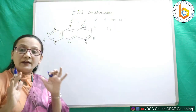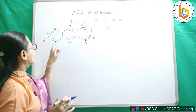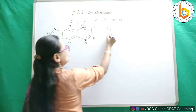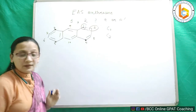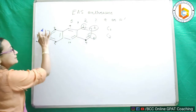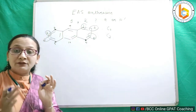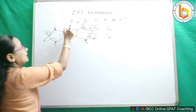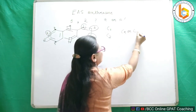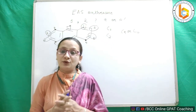We are only considering attack at position 1 because it automatically covers positions 4, 5, and 8. The other position we will discuss is C2, which is similar to positions 2, 3, 6, and 7. The next position is C9 and C10 — they are also the same. So let us see where exactly electrophilic aromatic substitution will occur.